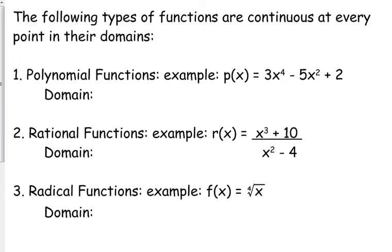The statement says: the following types of functions are continuous at every point in their domains. So if something is excluded from the domain, there's some kind of discontinuity there. Number one: polynomial functions. They can be any form — anytime you have various raised powers, you're talking about a polynomial. The domain is all real numbers. Polynomial functions are continuous everywhere, because you can plug in anything for x, raise it to any power, multiply or add any number, and still get an answer.